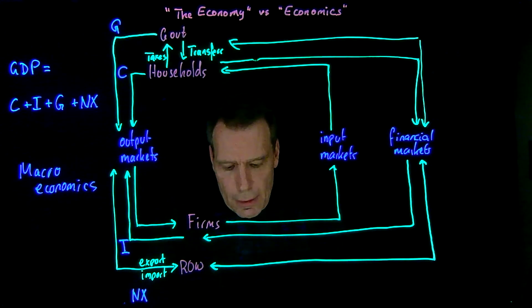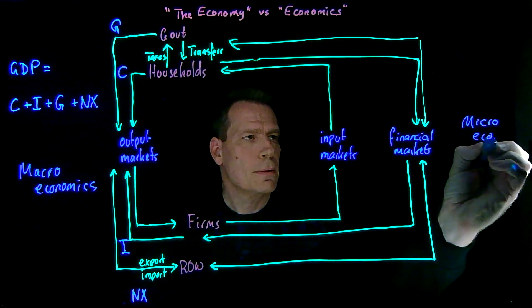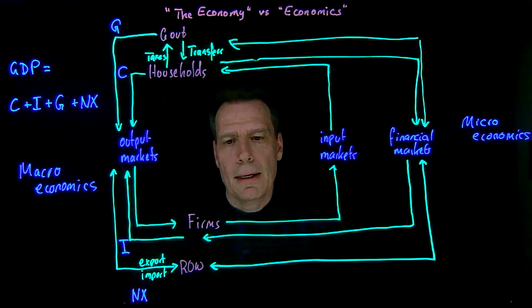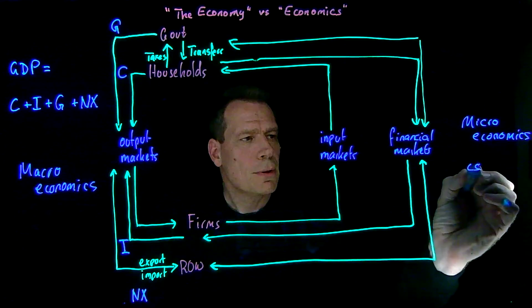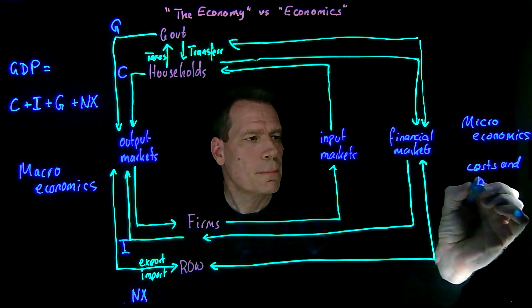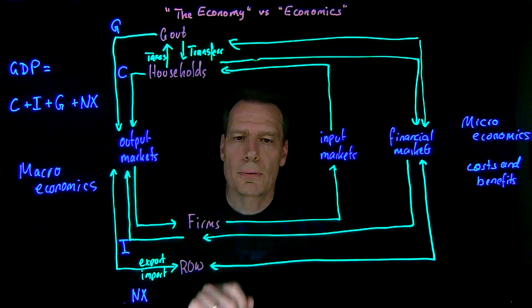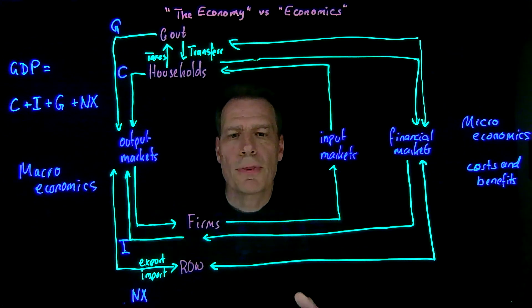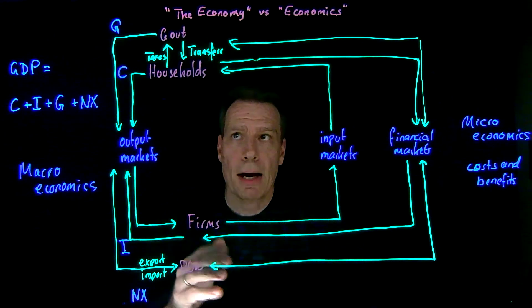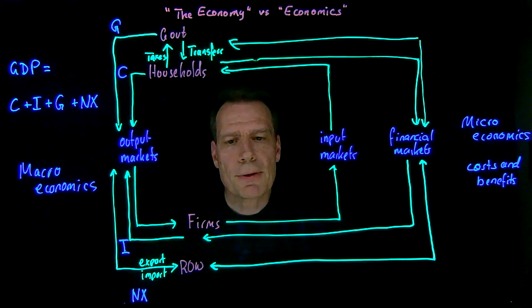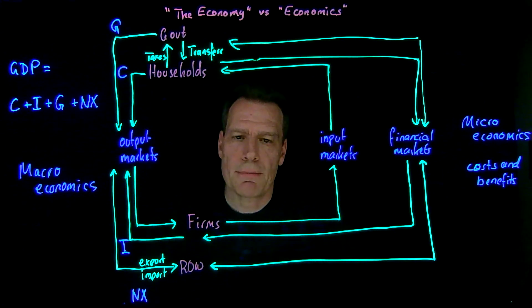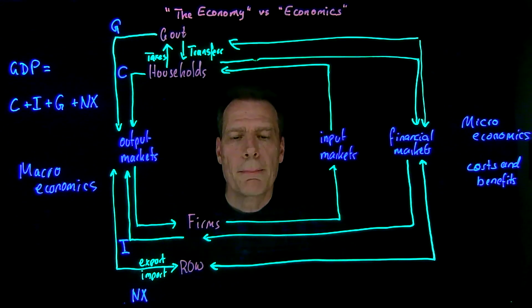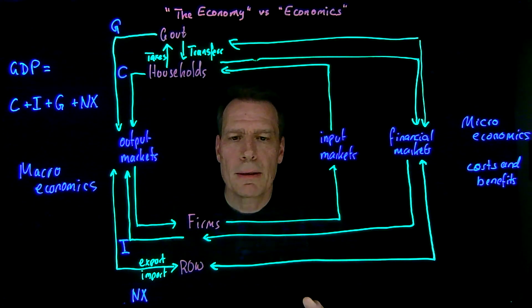But that's not all of economics. There's a second branch called microeconomics. Microeconomics is all about the decisions that we make that are based on costs and benefits. Microeconomists don't look at the system as a whole, but at components of the system and how individuals trade costs and benefits off against each other. This applies to all decisions where costs and benefits are relevant — not just those involving money costs and money benefits — including decisions made by households, governments, firms, and people in the rest of the world.